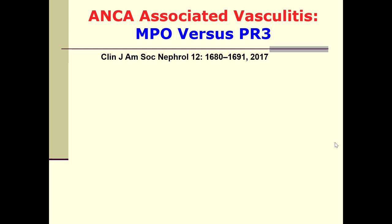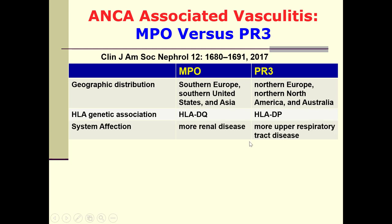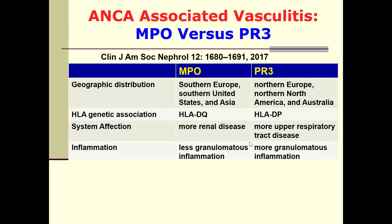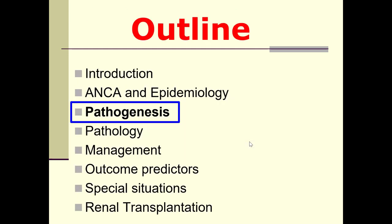There are geographic differences between MPO and Proteinase-3 ANCA. MPO is more common in Southern Europe, Southern United States, and Asia, while Proteinase-3 predominates in Northern Europe, Northern America, and Australia. HLA genetic associations include DQ for MPO-ANCA and DP for Proteinase-3 ANCA. MPO shows more renal affection; Proteinase-3 shows more upper respiratory tract disease and granulomatous inflammation. Biopsy reveals more sclerosis in MPO and more necrosis in Proteinase-3. Relapse is more common with Proteinase-3 ANCA.